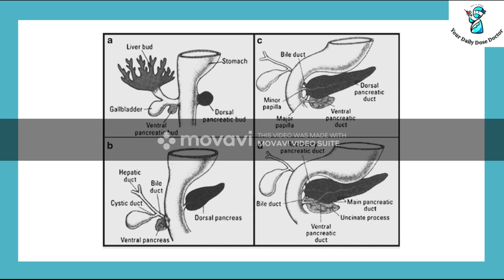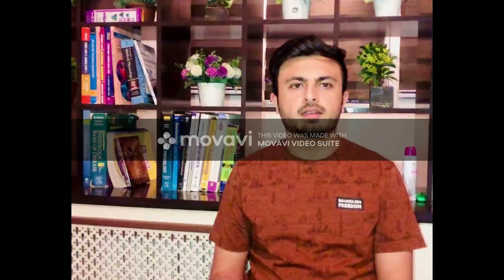The dorsal bud also gives rise to the accessory pancreatic duct, which empties into the minor duodenal papilla of Santorini. Thank you for watching this video. In our next video, we will discuss about the development of the midgut.